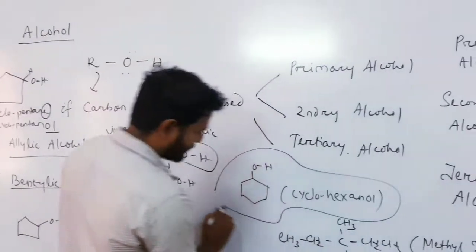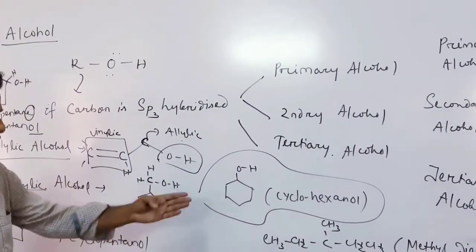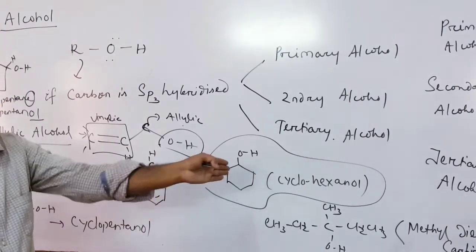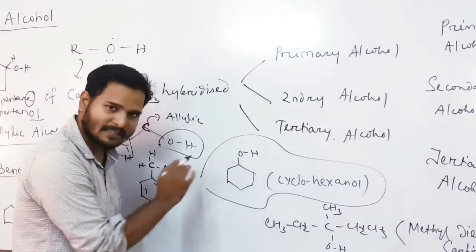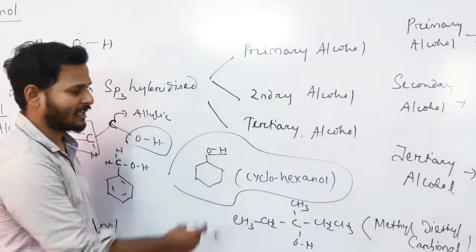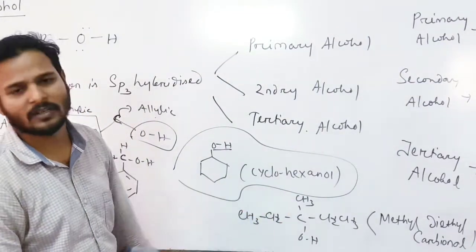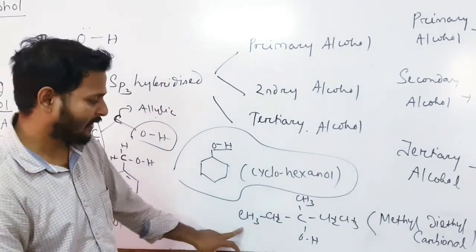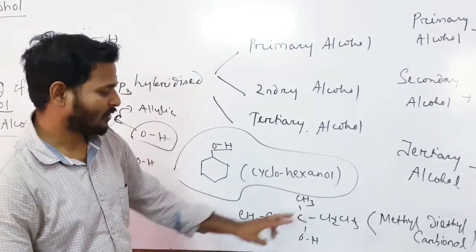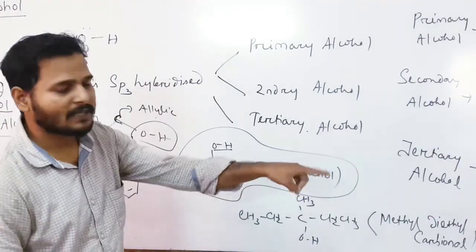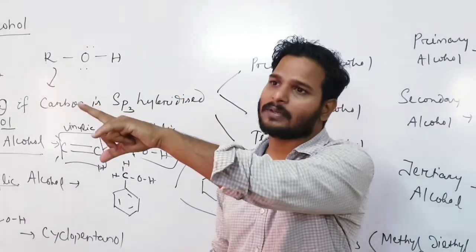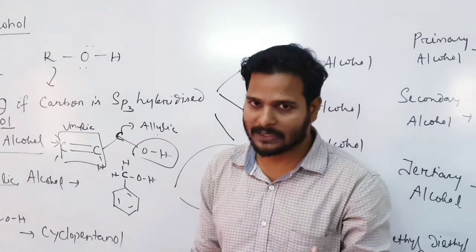Cyclopentanol and cyclohexanol — cyclohexanol has six carbons, all sp3 hybridized, all single-bond carbons arranged in a cyclic manner with OH substituted in place of hydrogen. This is called cyclohexanol. There is also a different naming system called carbinol naming — for example, methyl diethyl carbinol. Alcohols have OH as the functional group.